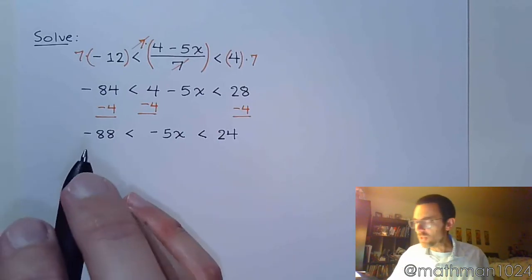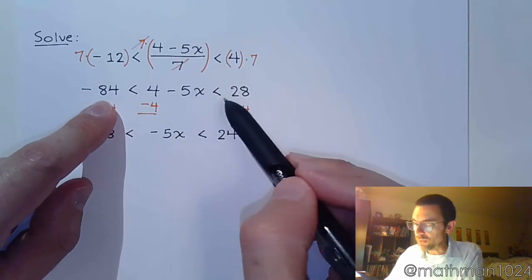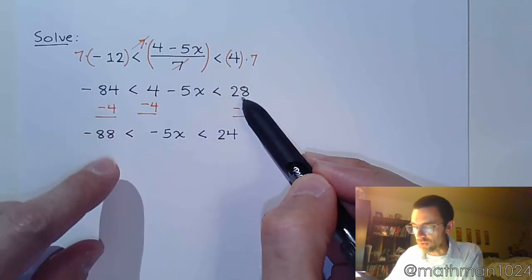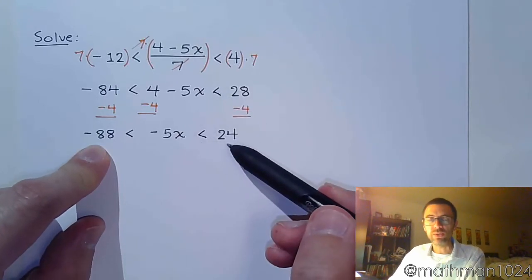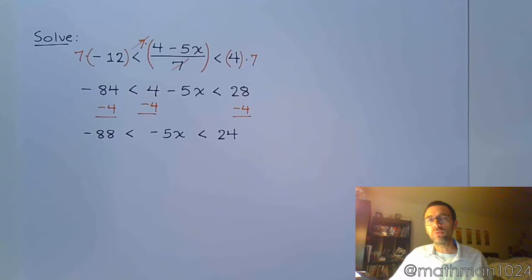Now, notice here at the very beginning, we had negative 12 was less than 4. True. Negative 84 is less than 28. That's true. And negative 88 is less than 24. Still a true statement in terms of the order that we have for the real number line.